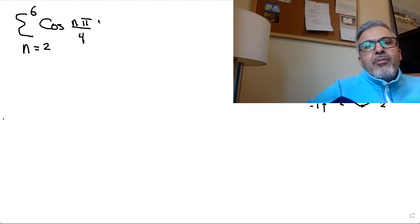So it's the sum from n=2 to 6 of cos nπ over 4. I'm putting down the 45-degree triangle, which is π over 4, and also y equals cos θ. We'll need this graph to interpolate some of the answers.